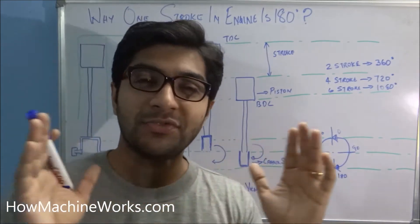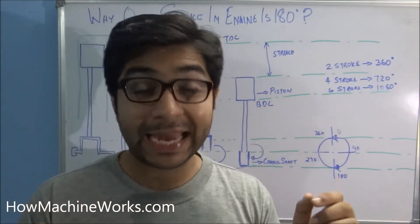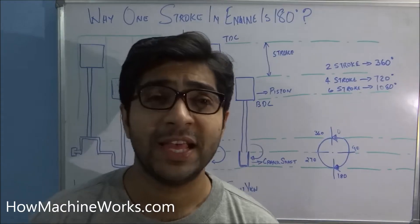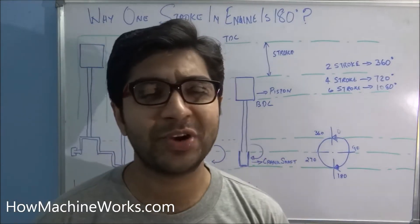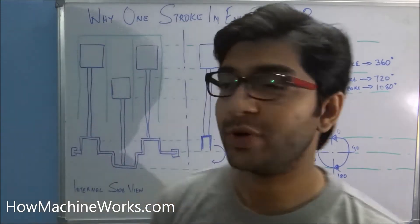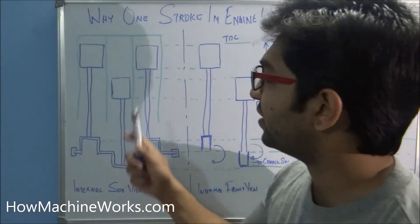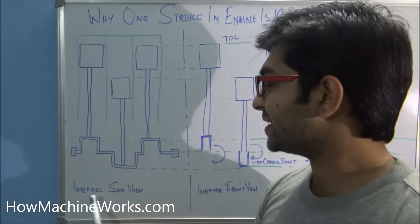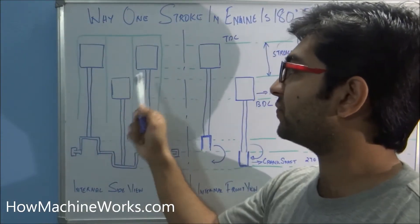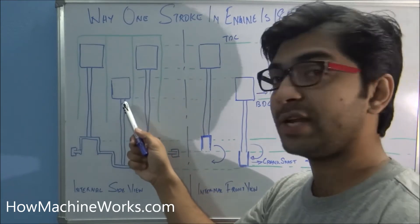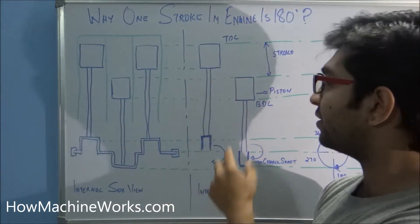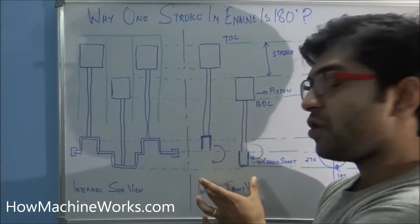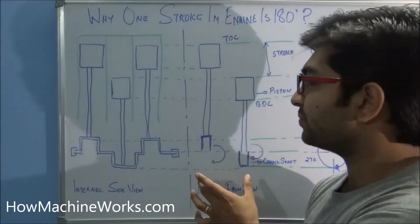In this video we will discuss in detail about how it happens, what the stroke is, and the stroke length. So here we have an engine — this is the internal side view of a three-cylinder engine, and here you can see the internal front view of the same engine.